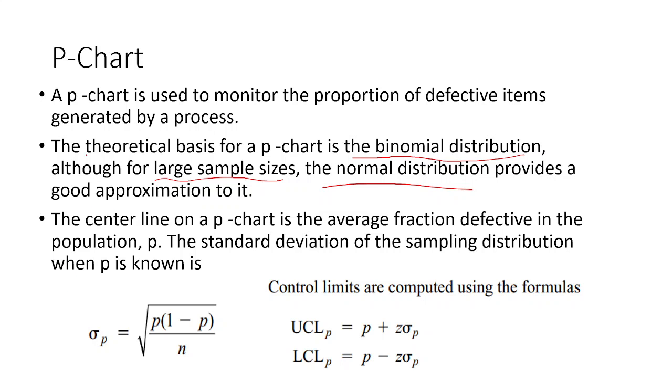Let us have the formula for the p-chart. In my previous video of mean chart and range chart, I have already told you what is the upper control limit and what is the lower control limit. For p-chart, the formulas for UCL and LCL are shown, and how to find out sigma p: sigma p is under root of p into 1 minus p divided by n.